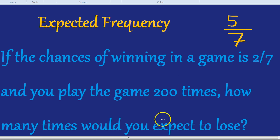In other words, what we do is we always multiply the probability of something happening by the amount of times with which it could happen. So in other words, the amount of times you play the game or take part in the experiment.